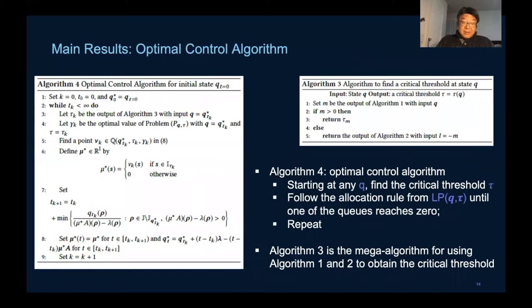This notion of critical threshold then leads to our scheduling algorithm for the fluid optimal control problem, namely for each initial state the optimal control algorithm will just follow the scheduling decisions according to iteratively solving the critical threshold as defined.